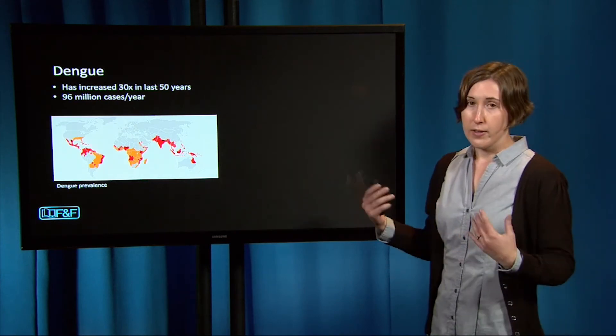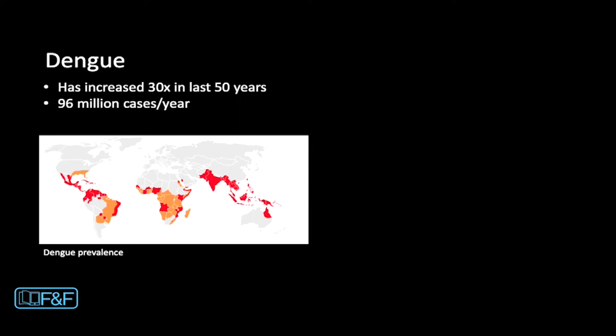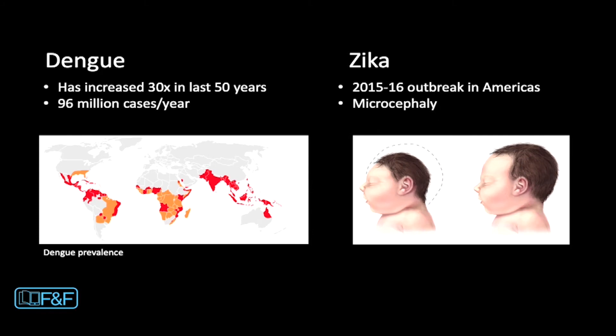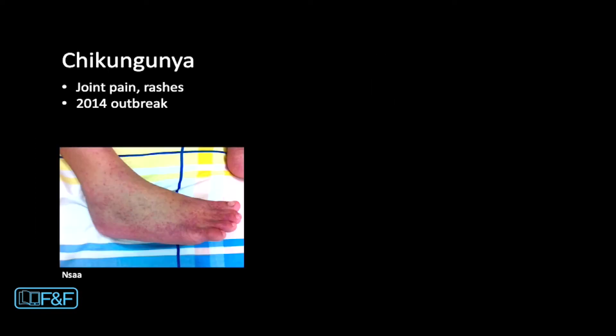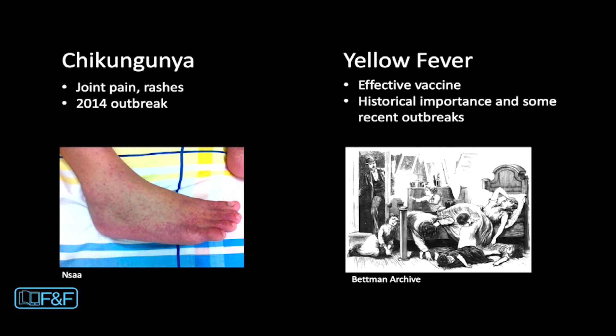Dengue is the disease our lab worries about most — it's widespread around the world and has increased 30-fold in the last 50 years. Zika is a closely related virus that got a lot of attention in the 2015–2016 outbreak in the Americas, especially in Brazil, due to its association with microcephaly. Chikungunya is another unpleasant virus that got attention in the 2014 outbreak in the Americas. And finally, yellow fever — of the four diseases, this is by far the most terrible and most deadly, but fortunately there is an effective vaccine. It's very historically important, though there are some recent outbreaks in South America and Africa.